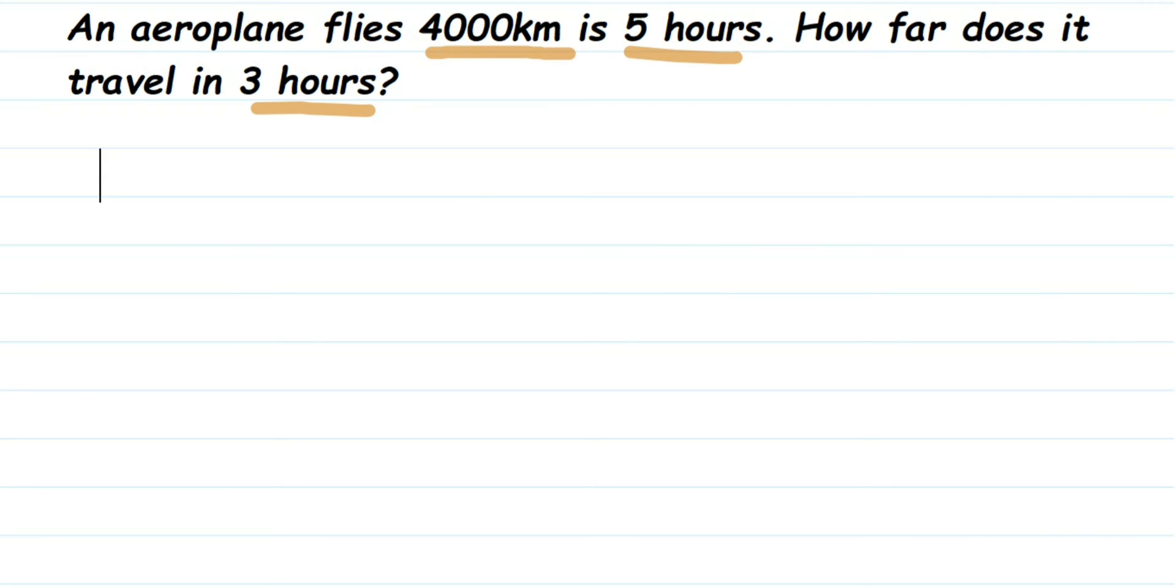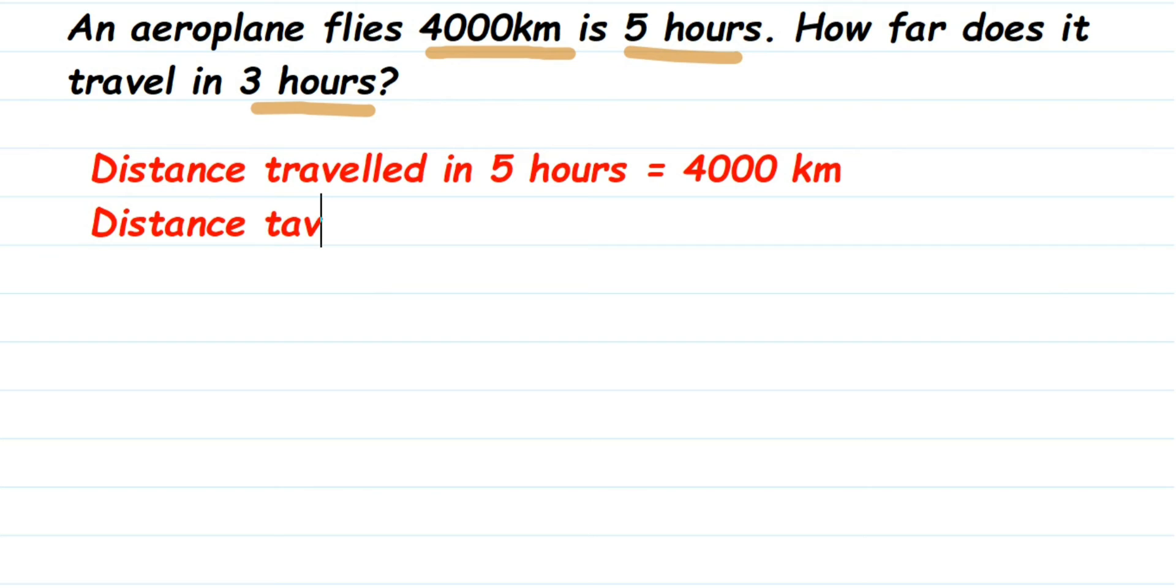So here we know the distance travelled. Distance travelled in 5 hours is equal to 4000 km. Now we are going to find out the distance travelled only in 1 hour.